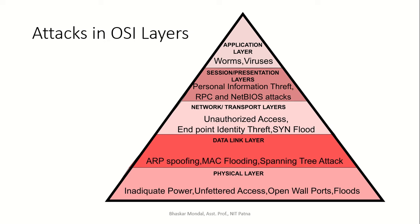Then comes the data link layer. In the data link layer, ARP spoofing, MAC flooding, and spanning tree attacks can happen.